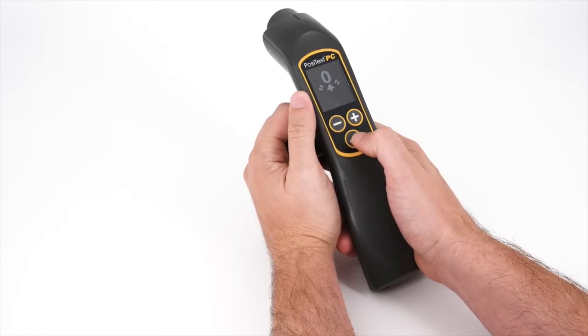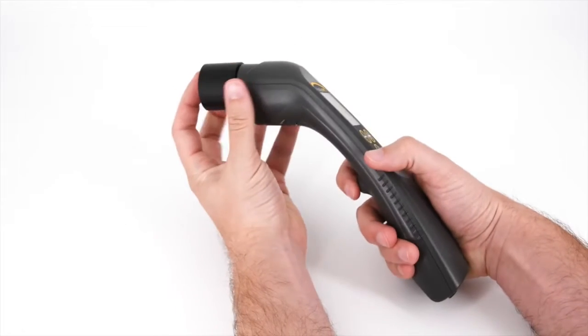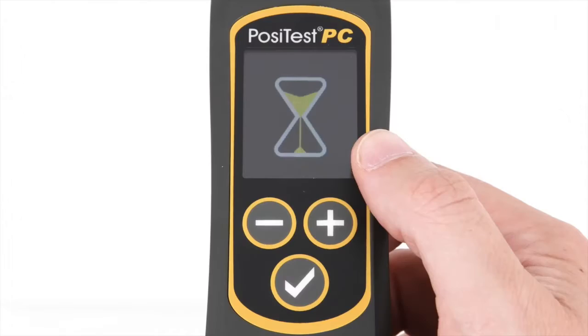Using the PosiTest PC is easy. When operated for the first time, it must be zeroed using the included zero fixture. Once complete, the instrument is ready to measure.